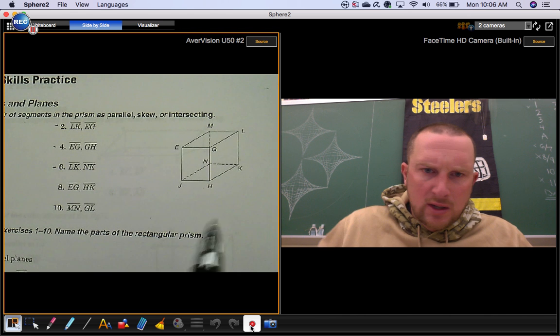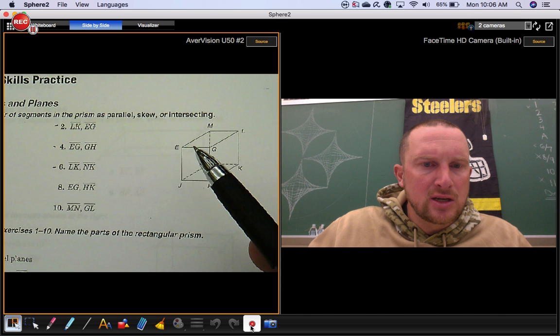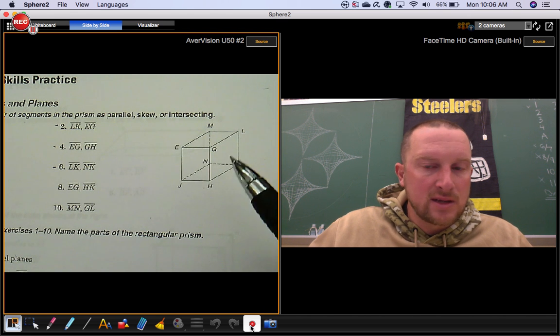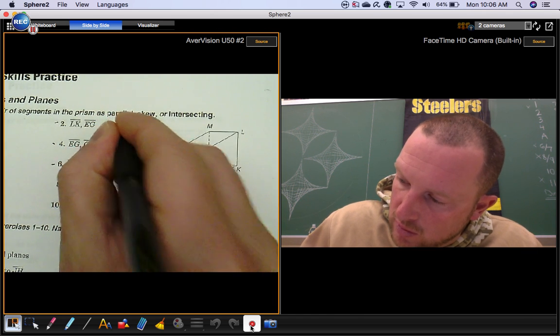Number two, segment LK, that's this vertical segment, and segment EG, it's a horizontal segment that's in front of it. They are not on the same plane. They don't touch each other. That's what you call skew segments.